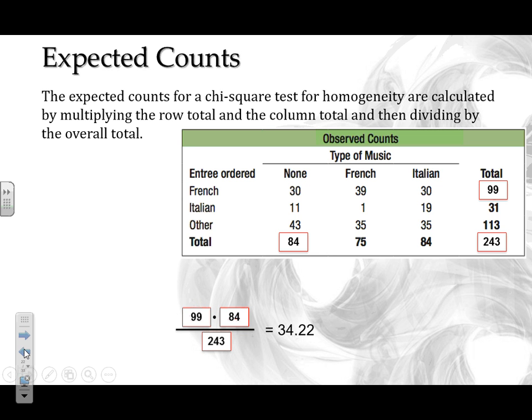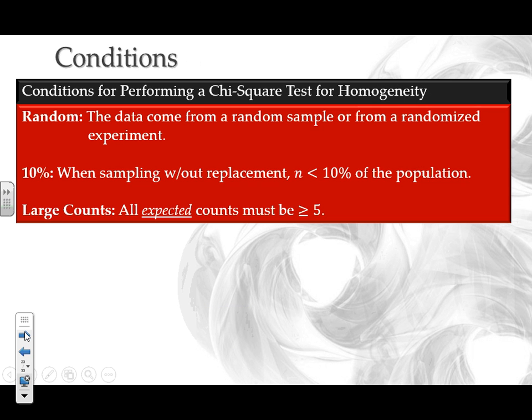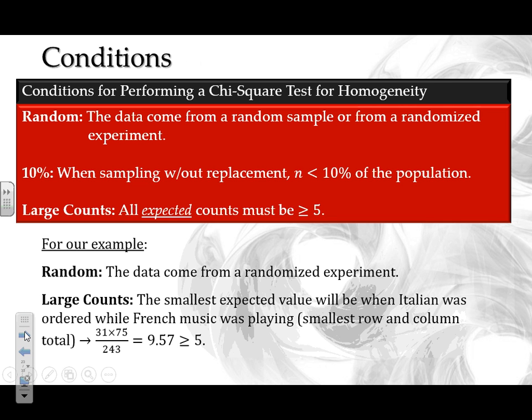If two column or row totals are tied for smallest, just pick one — the result will be the same either way. Going back to our example, the smallest expected cell frequency calculates to 9.57, which is larger than 5, so all expected counts are larger than 5 and the large counts condition is satisfied.